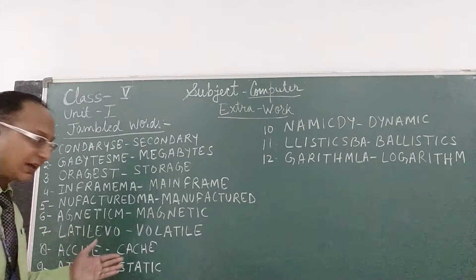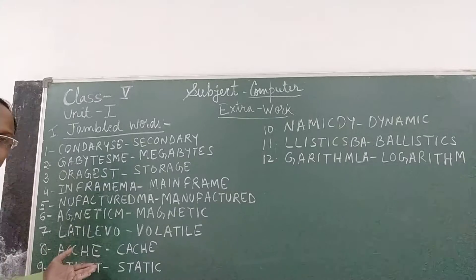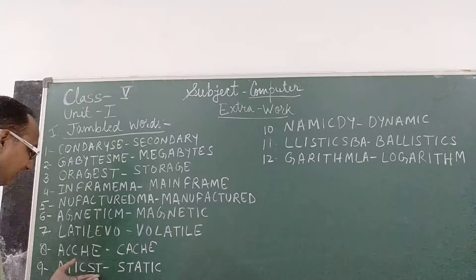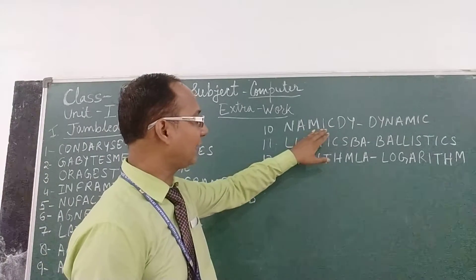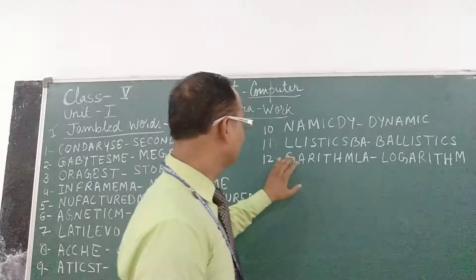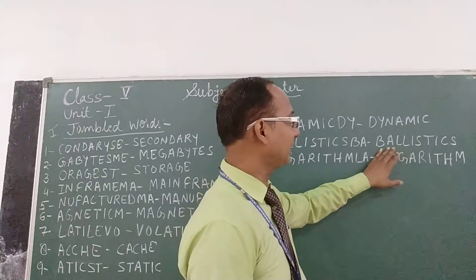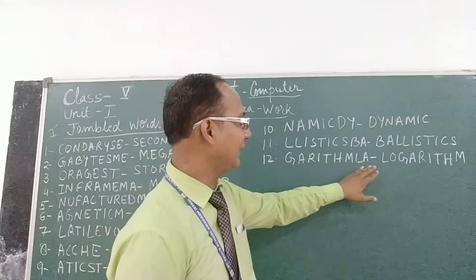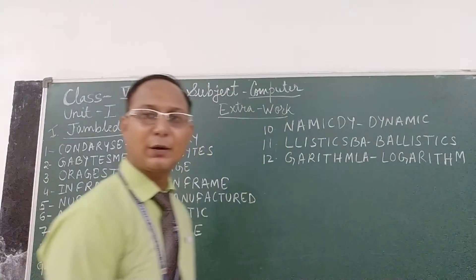Seventh, T-I-L-A-N-E-U, correct word is Volatile, V-O-L-A-T-I-L-E. Eighth is C-A-C-S-E, the correct word form is Cache, C-A-C-H-E. Ninth word is A-T-I-C-S-T, the correct word form is Static, S-T-A-T-I-C. Tenth word is N-A-M-I-C-D-Y, the correct word form is Dynamic, D-Y-N-A-M-I-C. Eleventh is L-L-I-S-T-I-C-S-B-A, the correct word form is Ballistics, B-A-L-L-I-S-T-I-C-S. Twelfth is G-A-R-I-T-H-M-L-O, the correct word form is Logarithm, L-O-G-A-R-I-T-H-M. Now note it down in your notebook.